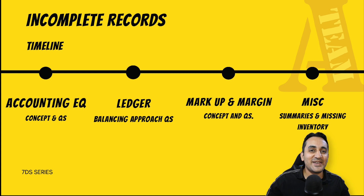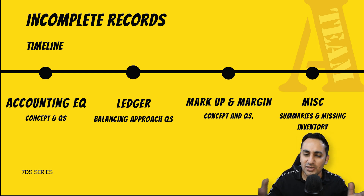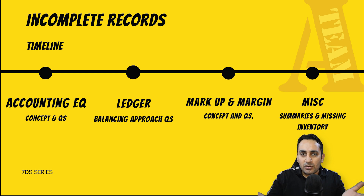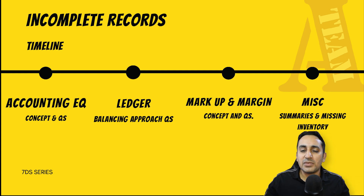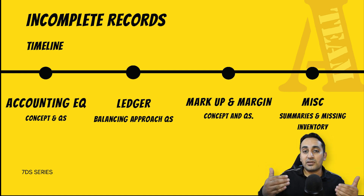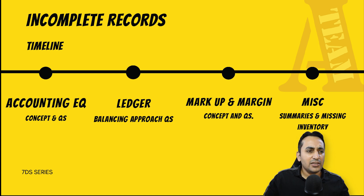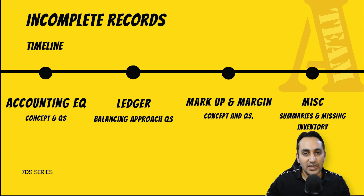और आखरी चीज़ - miscellaneous concepts के कुछ एक-दो सवाल देखेंगे जिनके अंदर कोई core concept नहीं है, पर यह सवाल भी आपको पूछे जा सकते हैं। Cash या bank summaries के basis पे missing figure या missing inventory निकालने को बोला जा सकता है। तो let's move on and quickly see accounting equation।